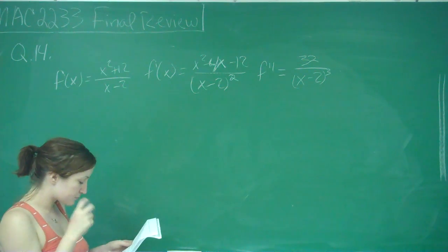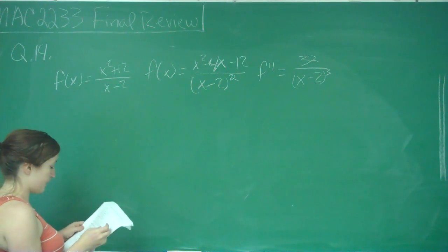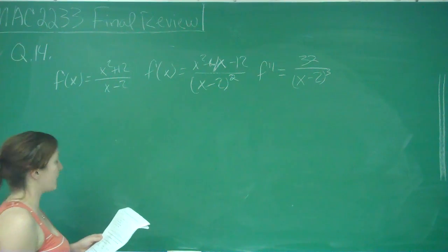Be sure to consider domain. So the first one says f of x has a relative maximum at x equals negative 2 and a relative minimum at x equals 6.